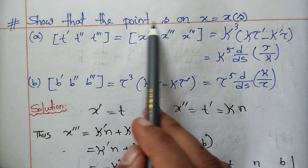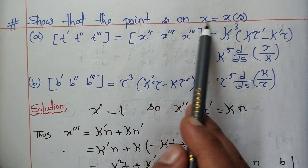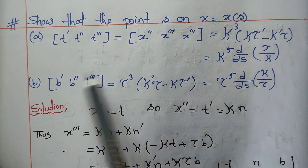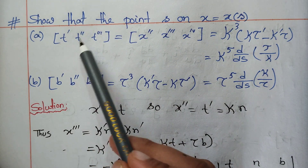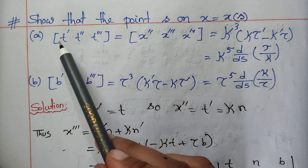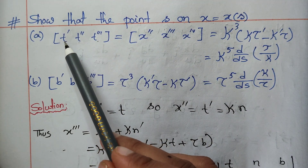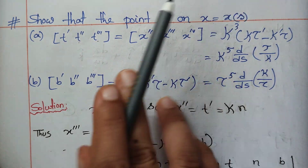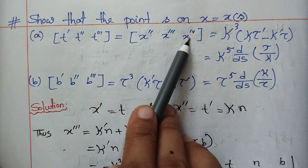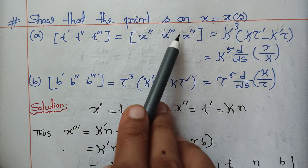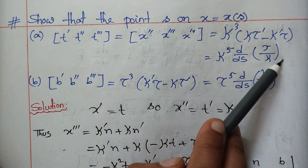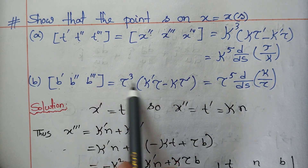We can show that the point s on x equals 2, so t, t double prime, t triple prime, x double prime. Normal t is x prime, so t prime is x double prime, t triple prime means x to the power 4, so the 4th prime. This is the number: x, x double prime, t triple prime.